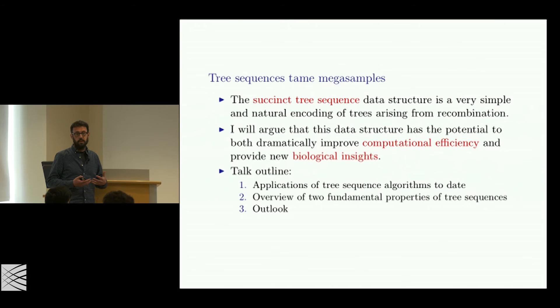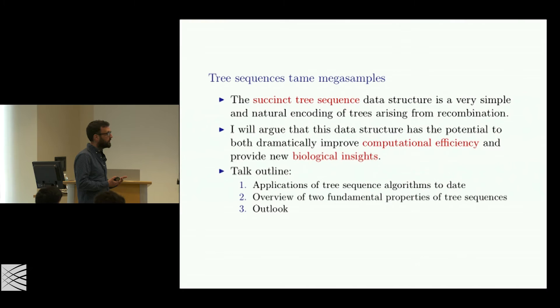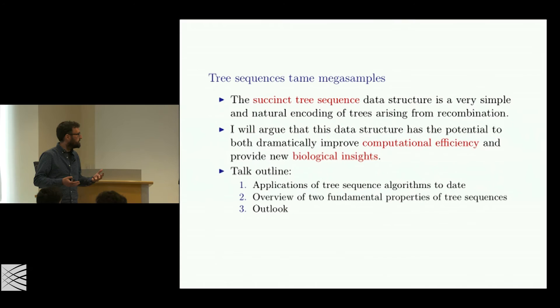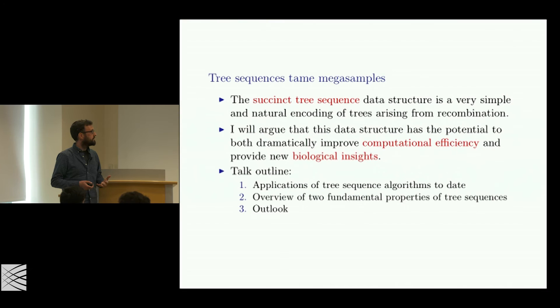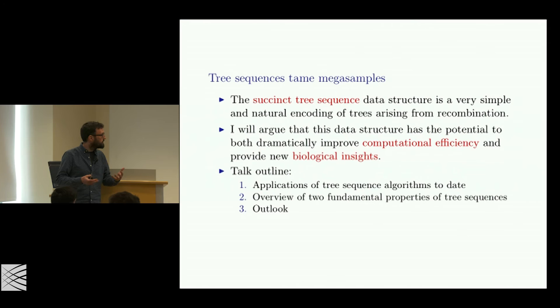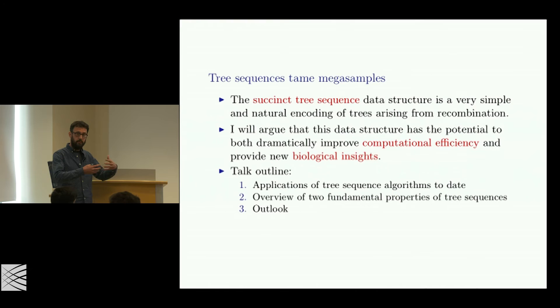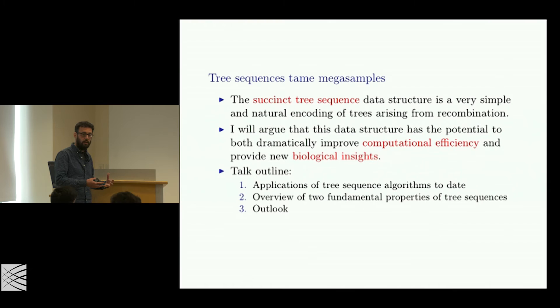One reason we're not using trees as a computational tool in large-scale genomics today is that nature isn't that simple — we don't have a single tree describing ancestry across a chromosome, because of recombination. Any time you have non-clonal inheritance, there will be parts of a child's genome inheriting ancestry from different parents, necessarily meaning different trees across the genome. As Wilder showed clearly, when you have a breakpoint this corresponds to a change in the tree, encoded in the sequence of correlated trees as you move across the genome.